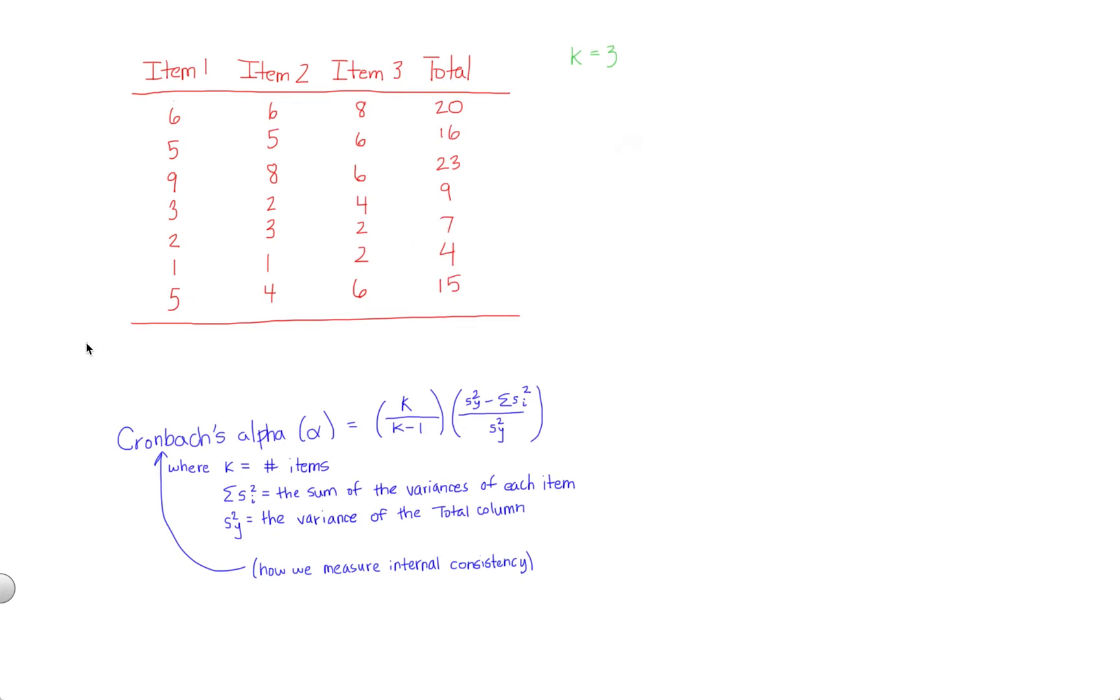So for now, I'm just going to write variance down here in this table to remind me that I'm going to need the variance of each column. And I'm not going to go through the work of the variance for each column here. This is something you would have to do. I'm just going to give you the answers for now because I don't want to get too bogged down with the details. So for item one, the variance is 7.29.